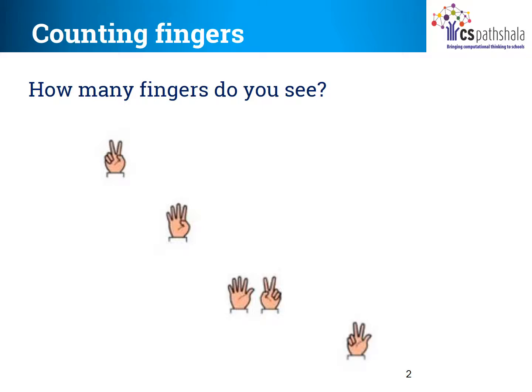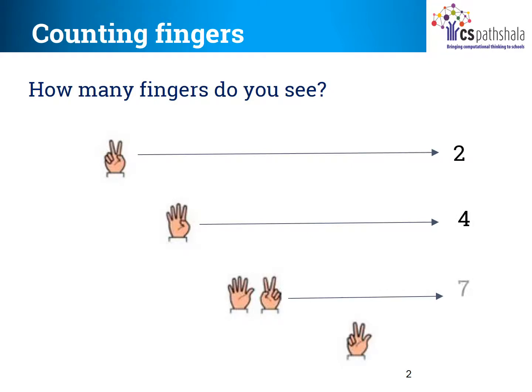And in this, one, two, three. Let's check whether we are right. Two, four. One, two, three, seven and three. We are right.